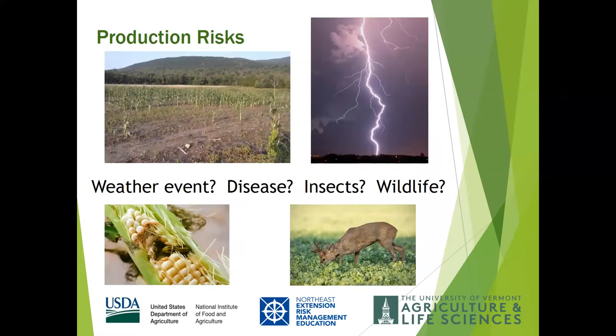Of all the risks that can jeopardize any farming operation, natural events pose the greatest threat to a farm's production yield. Production risk can be anything that impacts the quantity or quality of your product. A single severe weather event can devastate a crop, and farmers are experiencing increased frequency of extreme weather events. Problems such as diseases, insects, and wildlife damage can dramatically reduce the yield or quality of a crop. As a new farmer, do you have crop insurance, disaster coverage, or some other backup plan in case something happens that decreases your yield or quality?